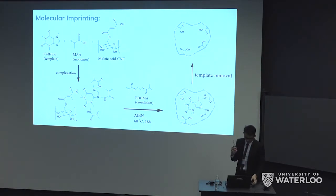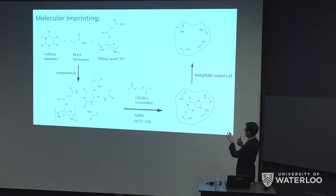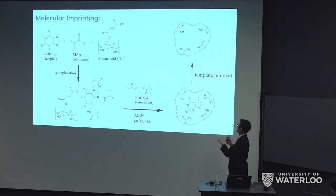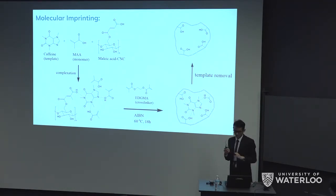After the polymerization, they will form binding pockets of caffeine. When we remove the caffeine template molecule using methanol and citric acid, they will leave behind small binding sites that are specific for caffeine only and no other molecules.